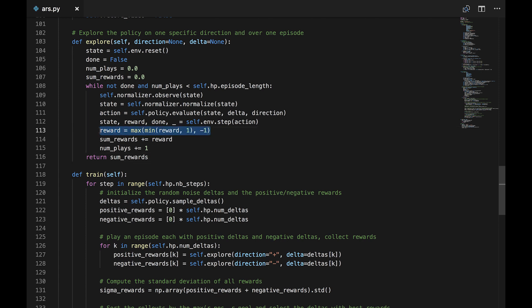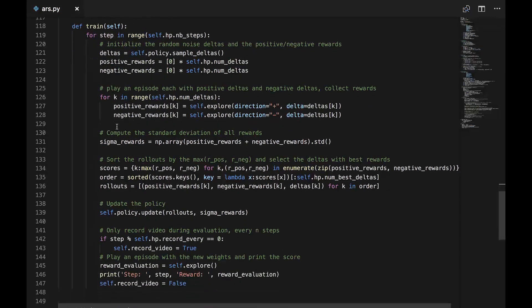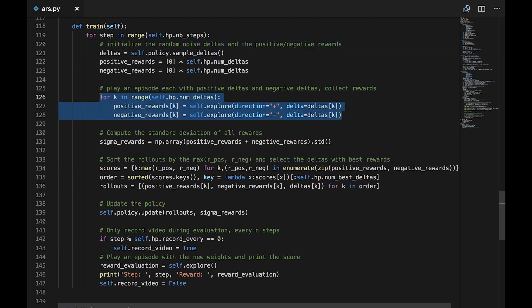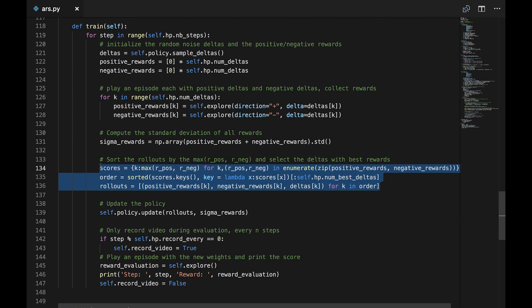Alright, now let's get into the main training loop. We generate a list of random noise deltas. Then, for each delta generated, we play one episode adding the delta to our weights, and one episode subtracting the delta from our weights. We compute the standard deviation of all the rewards returned. Now we sort the rollouts by highest reward with positive and negative variations, and keep only the chosen number of the best deltas.